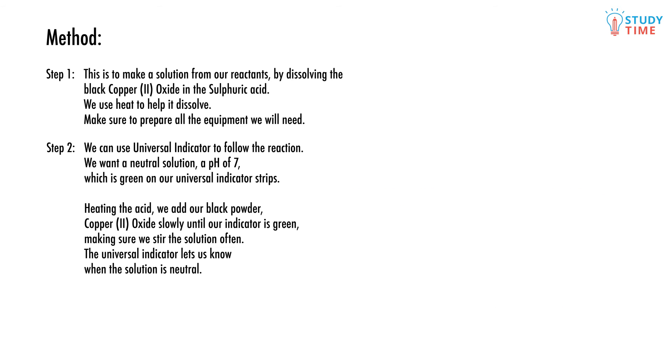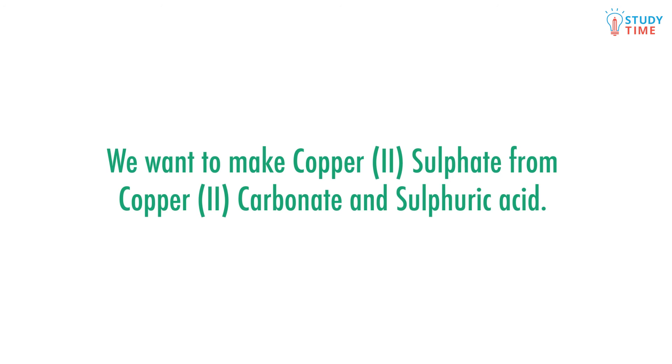So that was for a metal oxide, but what happens when we change our experiment slightly? Remember there are different types of reactions you should learn. In this one, we will do the same experiment but with copper (II) carbonate instead, which is a green powder.